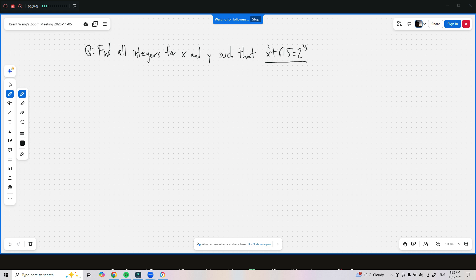I'm still bored, so let's do some more math. Here's a really cool question. Find all integers for x and y such that x squared plus 615 is equal to 2 to the power of y.